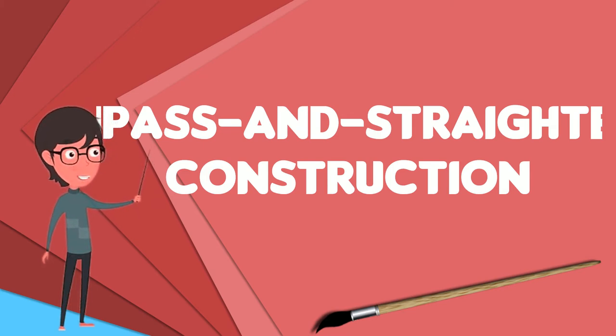More formally, the only permissible constructions are those granted by Euclid's first three postulates. It turns out to be the case that every point constructible using straightedge and compass may also be constructed using compass alone.